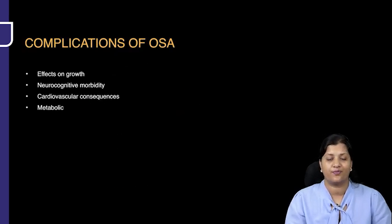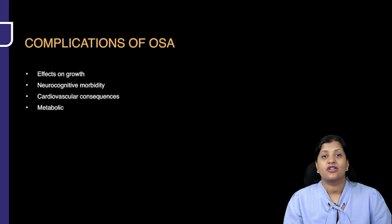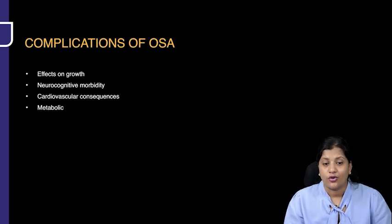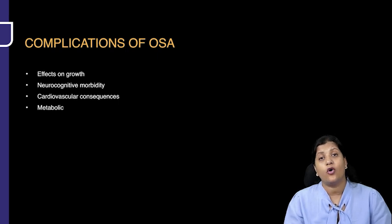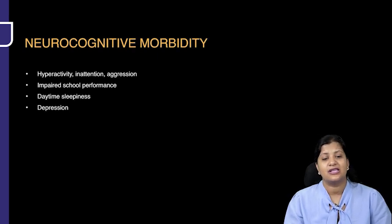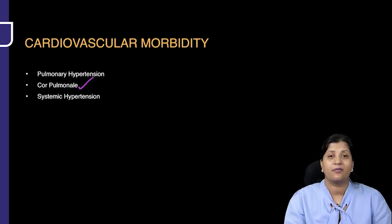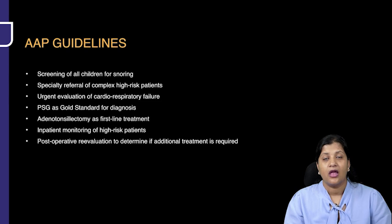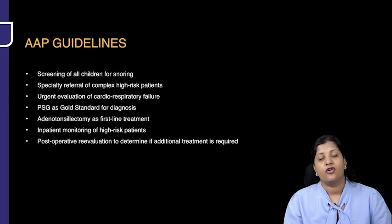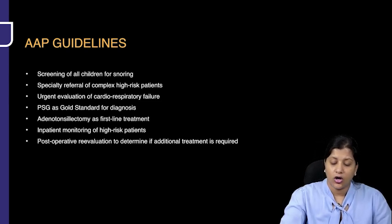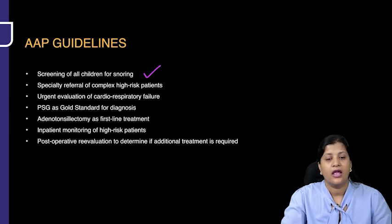The effects and complications of OSA include impacts on growth, neurocognitive function, cardiovascular health, metabolic function, and hormonal regulation. Children may have impaired growth, impaired activity, poor school performance, daytime sleepiness, pulmonary hypertension, right ventricular hypertrophy causing cor pulmonale, and systemic hypertension.